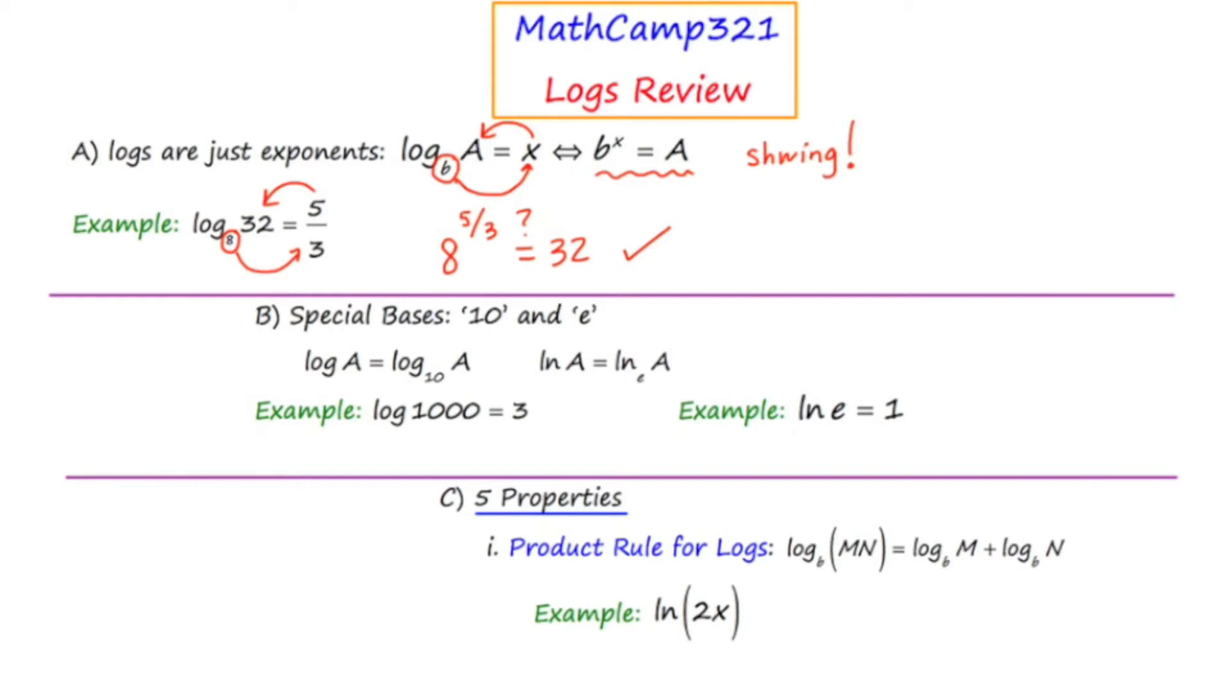Now let's go to point b. There are two special bases frequently seen when working with logs. One is the number 10, and the other is e. If you see a log expression, and it doesn't have a base, like right here, there's nothing written, then it is an assumed base of 10.